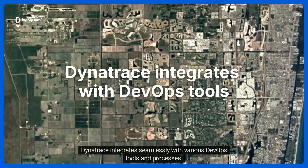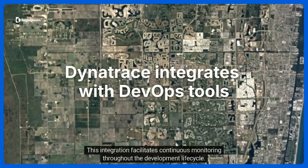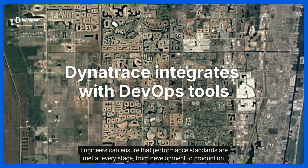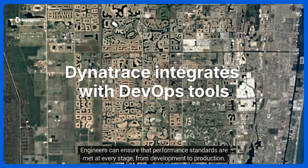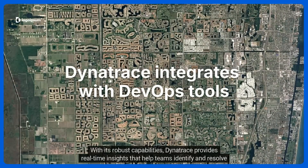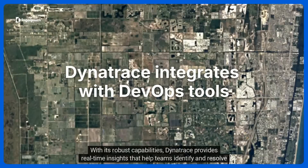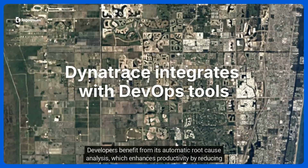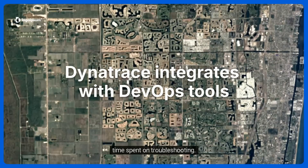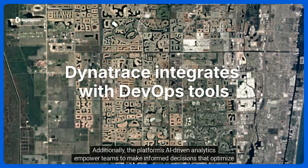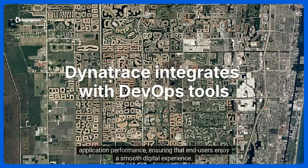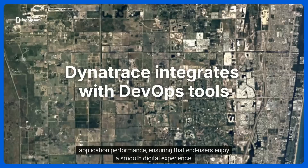Dynatrace integrates seamlessly with various DevOps tools and processes, facilitating continuous monitoring throughout the development lifecycle. Engineers can ensure that performance standards are met at every stage, from development to production. With its robust capabilities, Dynatrace provides real-time insights that help teams identify and resolve issues promptly. Developers benefit from its automatic root cause analysis, which enhances productivity by reducing time spent on troubleshooting. Additionally, the platform's AI-driven analytics empower teams to make informed decisions that optimize application performance, ensuring that end users enjoy a smooth digital experience.